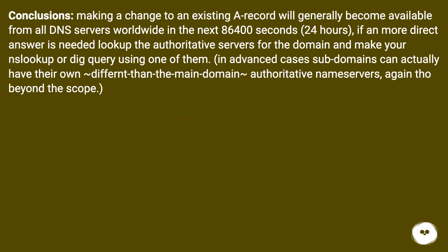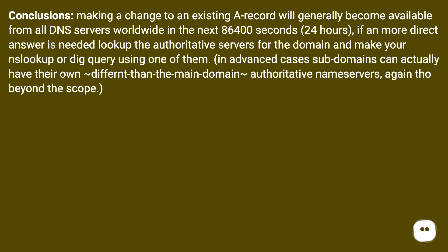Conclusions: Making a change to an existing A record will generally become available from all DNS servers worldwide within the next 86,400 seconds — 24 hours. If a more direct answer is needed, look up the authoritative servers for the domain and make your nslookup or dig query using one of them. In advanced cases, subdomains can actually have their own authoritative nameservers different from the main domain, though that is beyond the scope here.